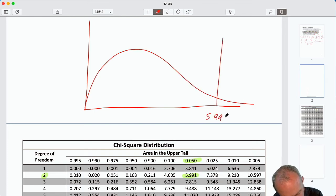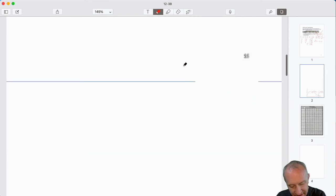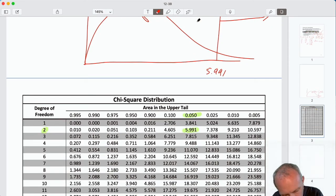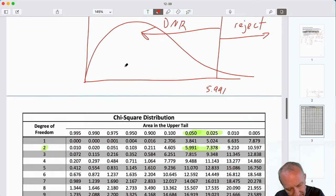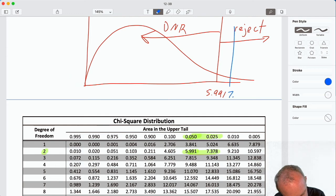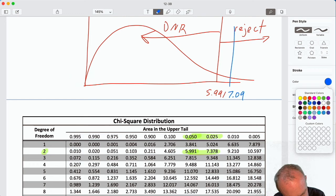5.991, that defines that reject and that do not reject region. Our test statistic was 7, just over 7, 7.09, so we're just between these two values which means my relevant probability is going to be between these two.